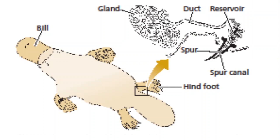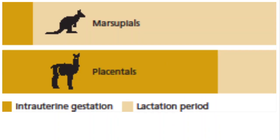Another interesting point about monotremes is that they are venomous. Particularly in the duck-billed platypus, there is a spur associated with the back leg. That spur shows up in both sexes, but in female offspring it never really develops. It's only fully functional and mature in the males, and it's used in male-male combat.